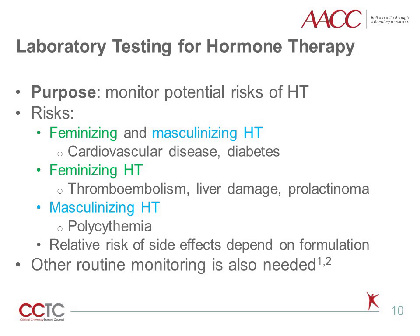For those on feminizing therapy, thromboembolism is one of the major risks. Additionally, liver damage has been noted in some studies, though recently the utility of monitoring liver function tests has been debated, since there appears to be only a transient change in a minority of patients. Rarely, patients on feminizing hormone therapy may develop a prolactinoma, which is a pituitary adenoma that produces prolactin. The major risk for those on masculinizing hormone therapy is polycythemia, since testosterone stimulates erythropoiesis. Interestingly, for both masculinizing and feminizing hormone therapy, some studies have suggested that transdermal formulations may be less likely than oral or intramuscular formulations to increase patient risk.